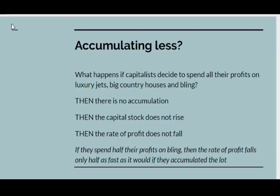Another factor is that capitalists may decide to accumulate less. I have assumed up to now that they reinvest all their profit. But what happens if they decide to spend all their profits on luxury jets, big country houses, and lots of bling? Under those circumstances there's no accumulation, the capital stock doesn't rise, and the rate of profit itself doesn't fall. If they spent half their profits on bling, then the rate of profit will fall only half as fast as it would if they accumulated the lot.